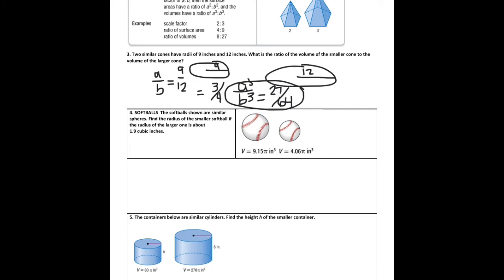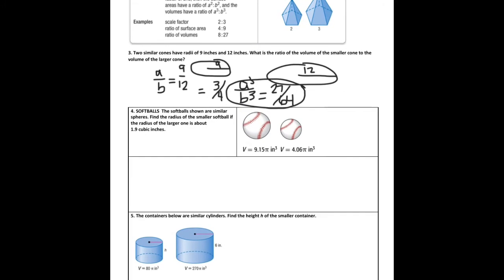So the softballs that are shown are similar. We need to find the radius of the smaller softball if the radius of the larger is about 1.9 cubic inches. So given is the a³ to b³ ratio. So I have 9.15π over 4.06π, and this is the cubed ratio. So these are the volumes. So if I were to take the cube root of each one of these, first of all, I'm going to reduce out the π's.